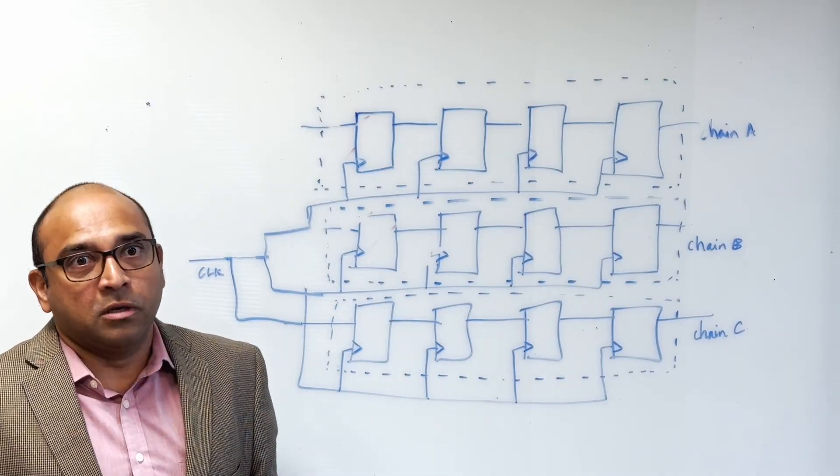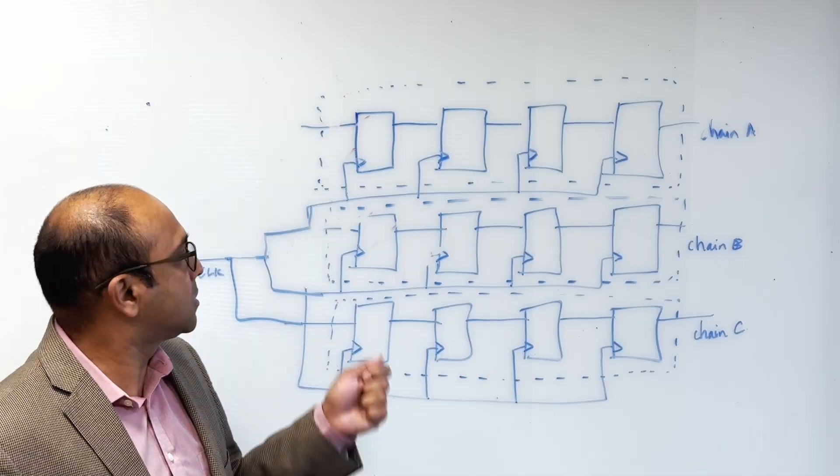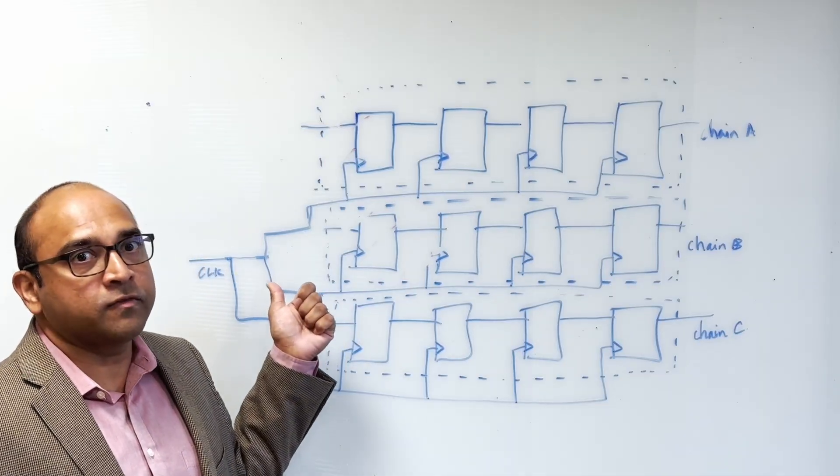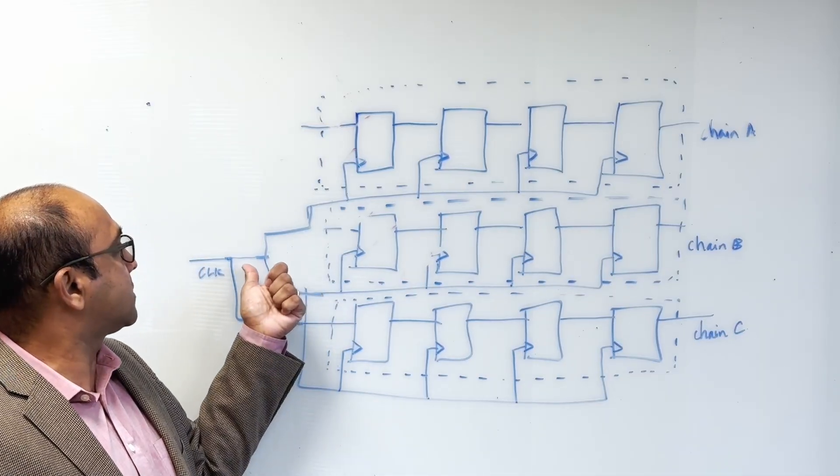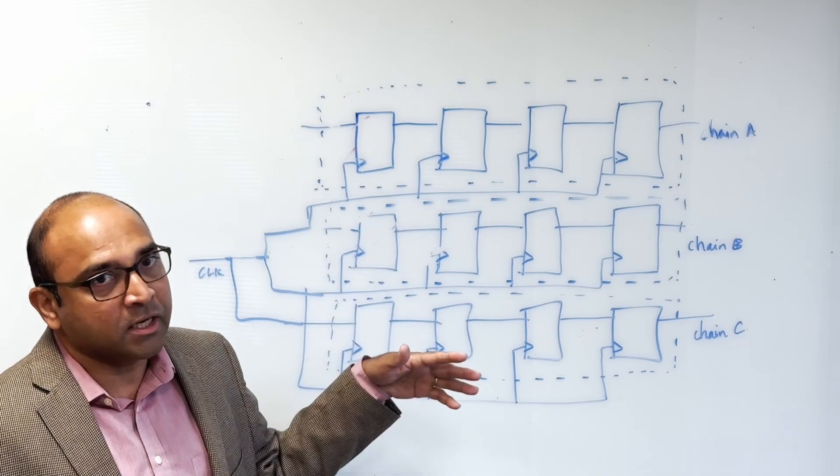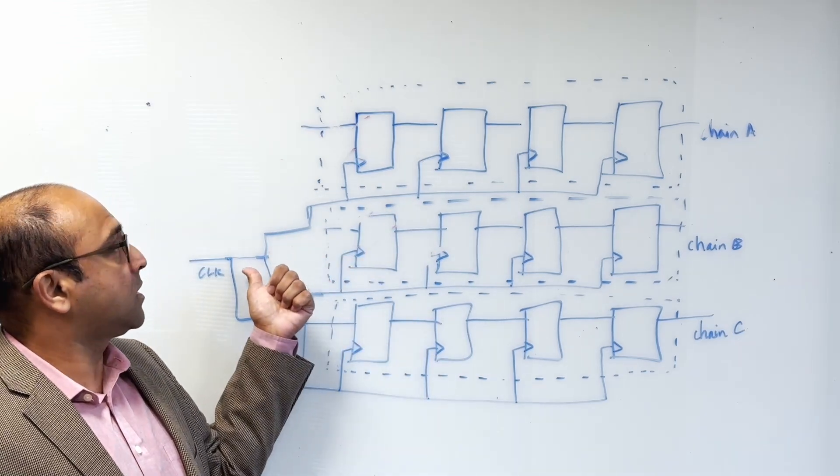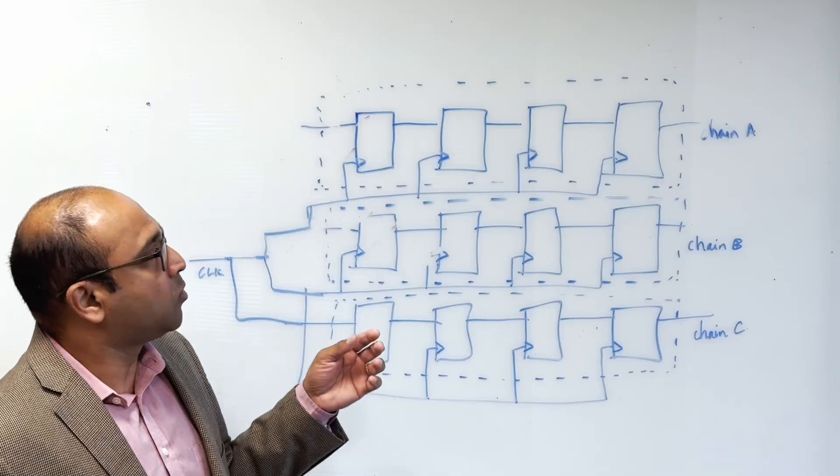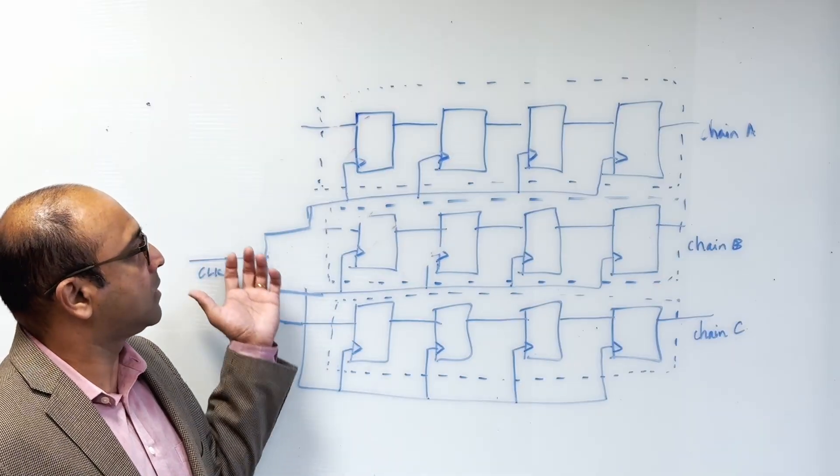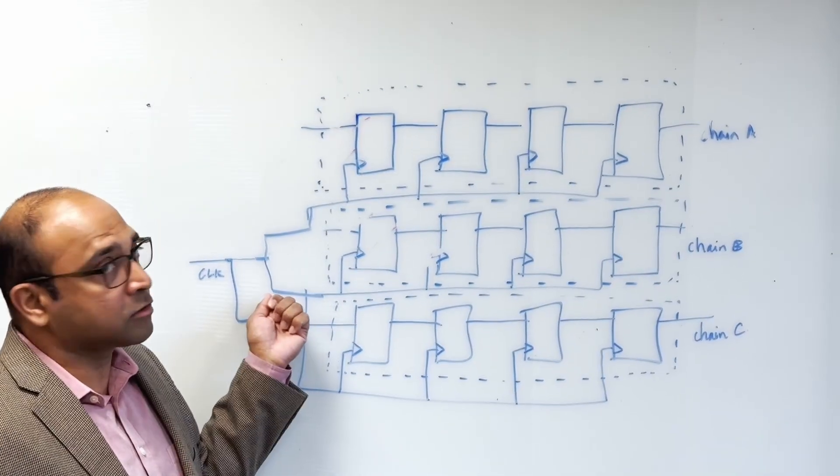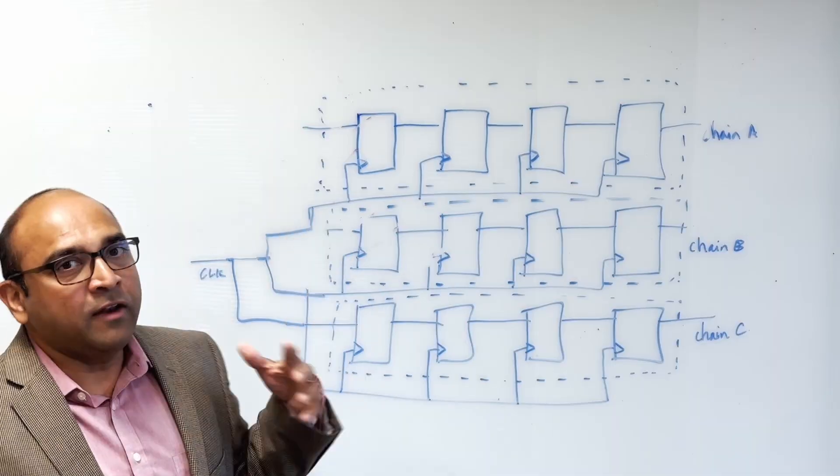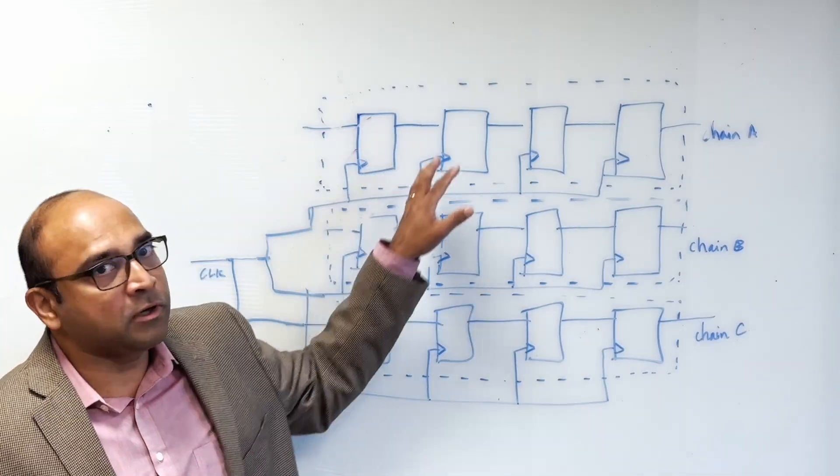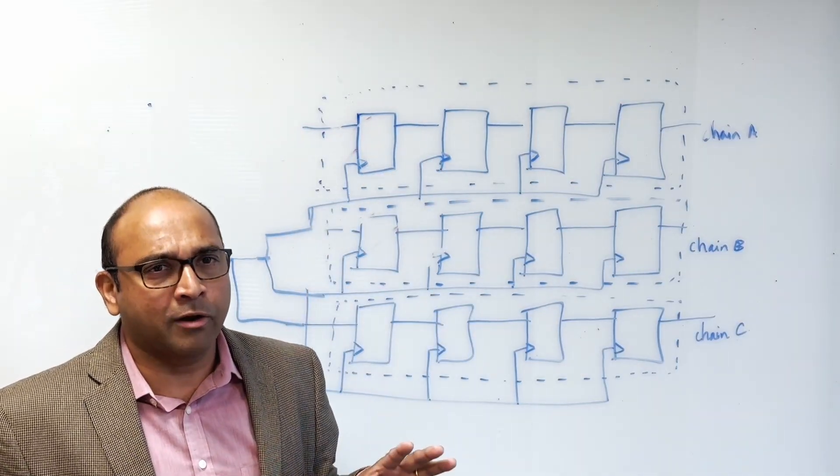What is new with new methodologies and new designs and technology nodes is that sometimes you have defects that exist in different parts of the design. But sometimes those defects can exist in the clock tree that drives these scan chains.